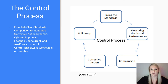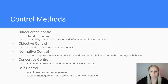Managers use five different methods to achieve control over their organizations. Bureaucratic control is top-down control used by management to influence employee behavior. Objective control is used to observe employee behavior. Normative control involves widely shared values and beliefs that guide employee behavior. Concertive control refers to beliefs shaped and negotiated by work groups. Finally, self-control, also known as self-management, is when managers and workers control their own behavior.